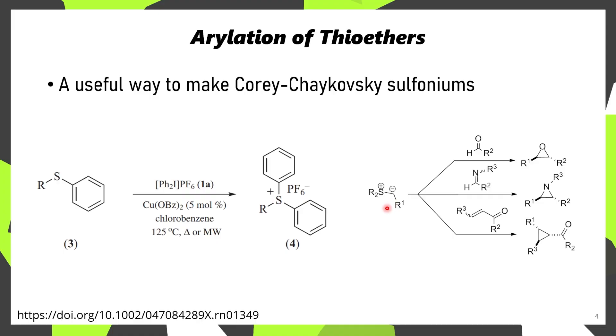These ylids can engage in a Corey-Tchaikovsky reaction, for instance with aldehydes, imines, or even Michael acceptors, affording epoxides, aziridines, and cyclopropanes, respectively.